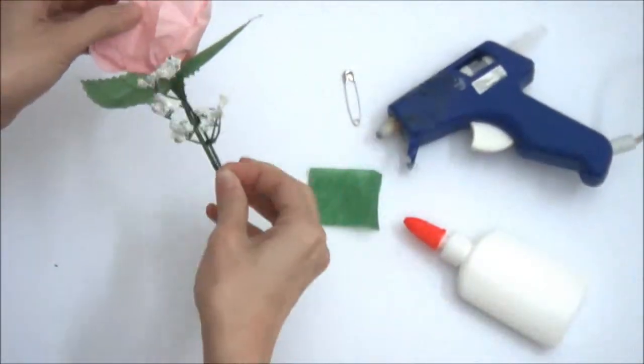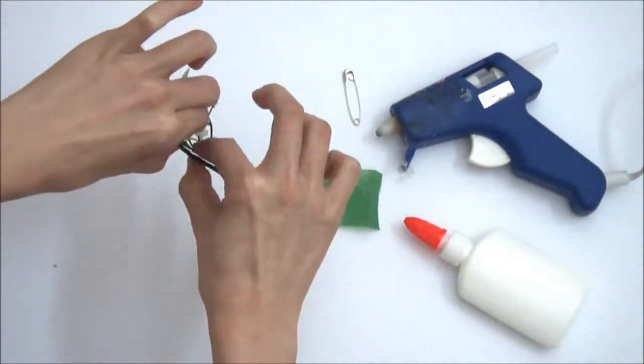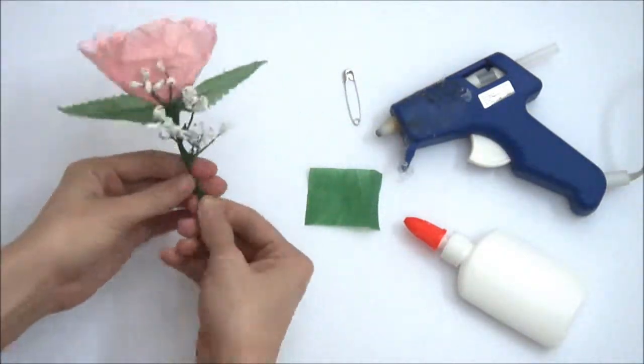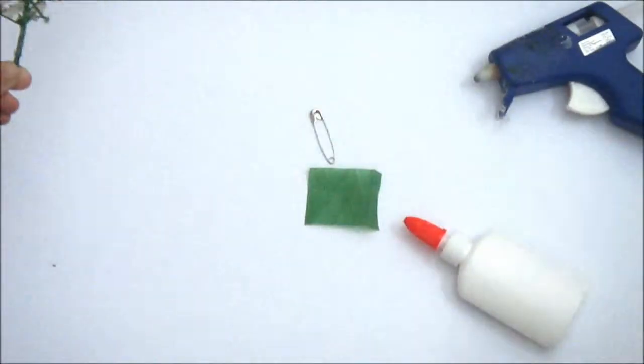So next we want to put the fillers so we just add some hot glue. Here I chose the white fillers. It's up to you how much you want to put, a lot or a little is really up to you.